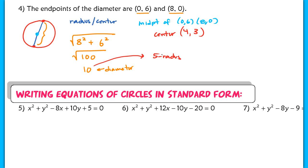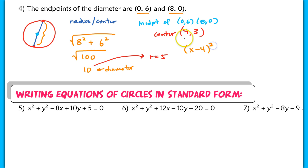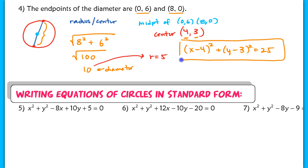r equals 5. So the equation of this circle: take (x minus 4) squared, add (y minus 3) squared, and set that equal to r squared, which is 25. There's the final answer.